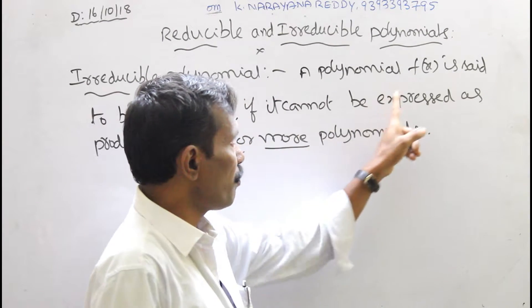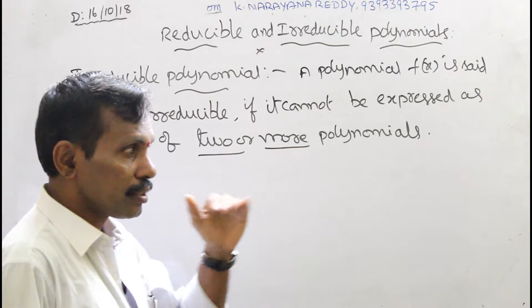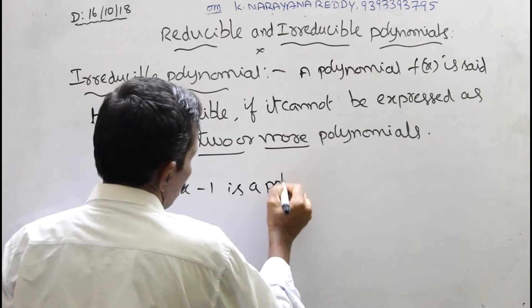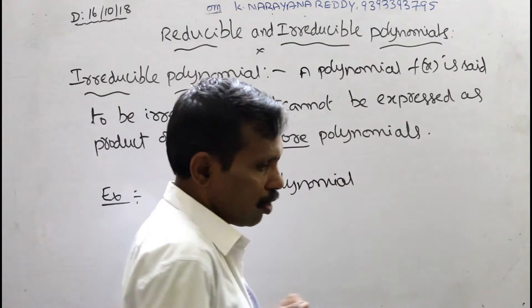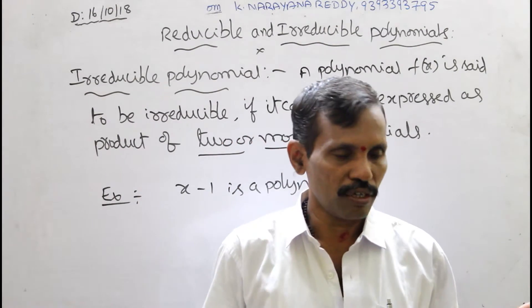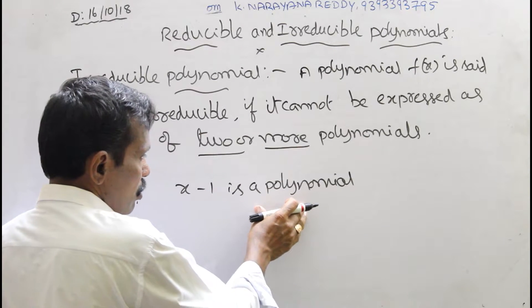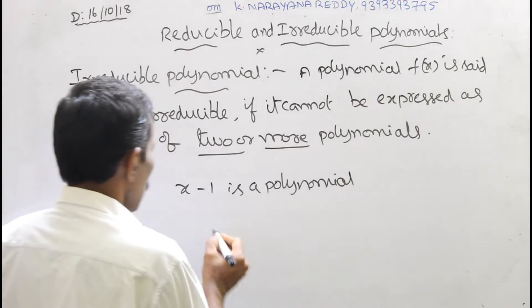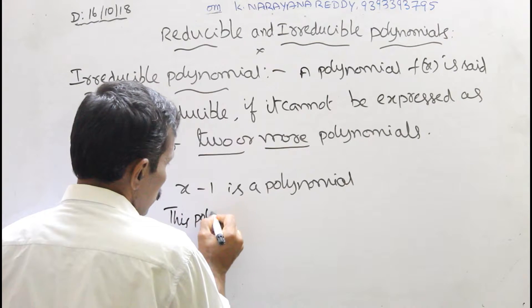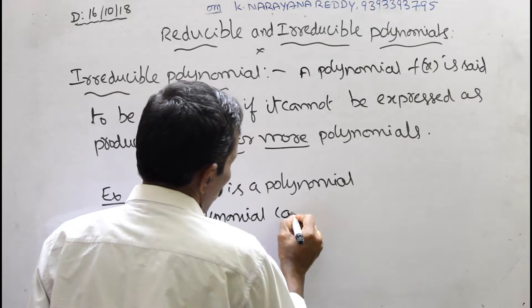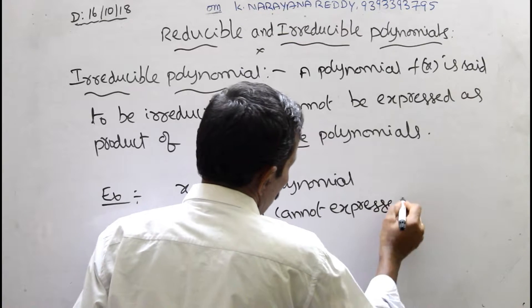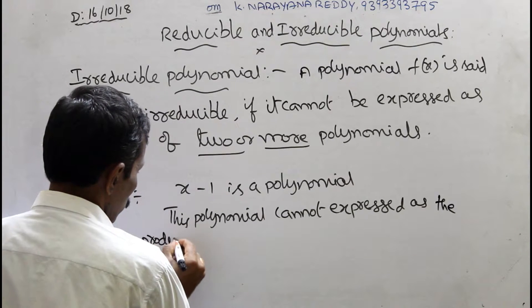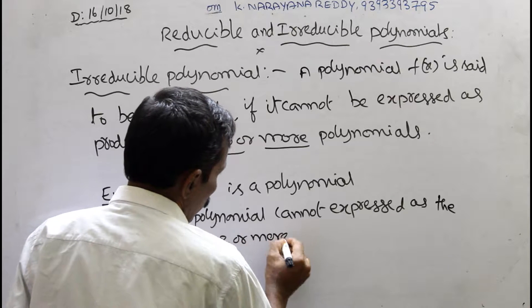We cannot reduce one irreducible polynomial into two or more polynomials. For example, take x minus 1 — it is a polynomial. This polynomial cannot be expressed as the product of two or more polynomials.